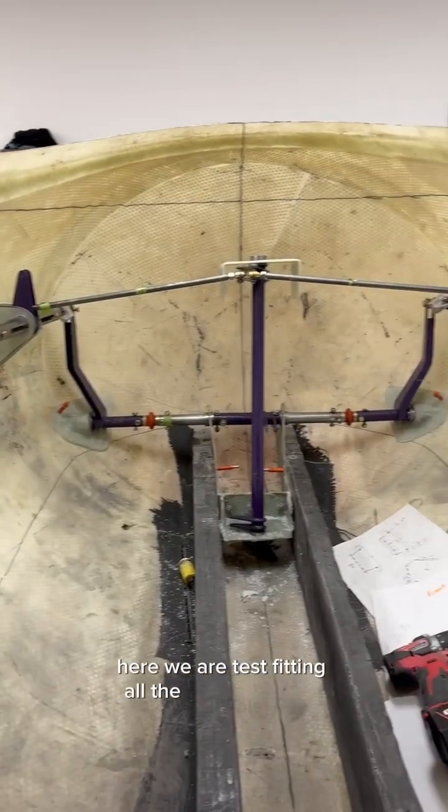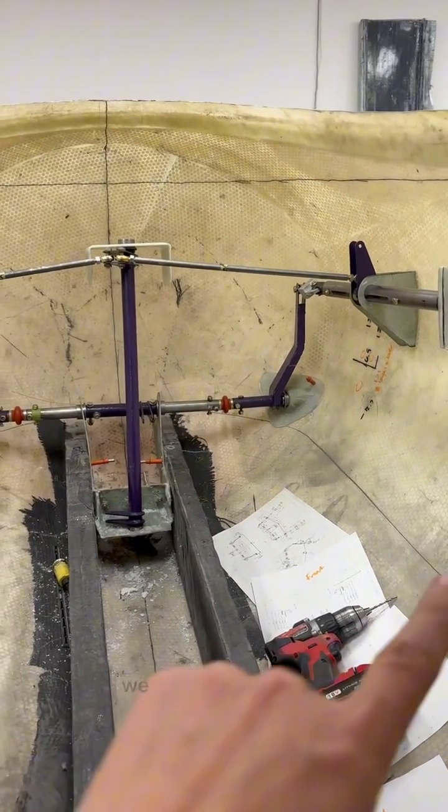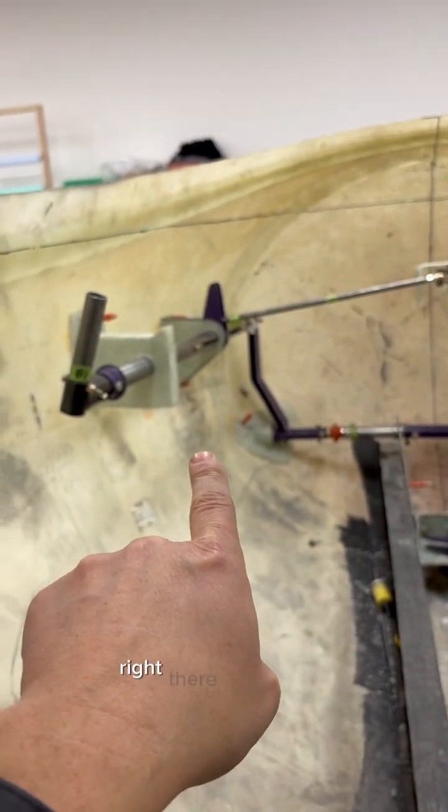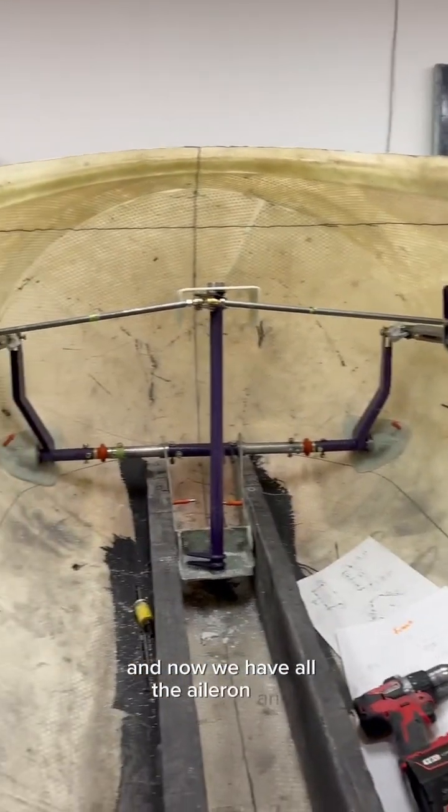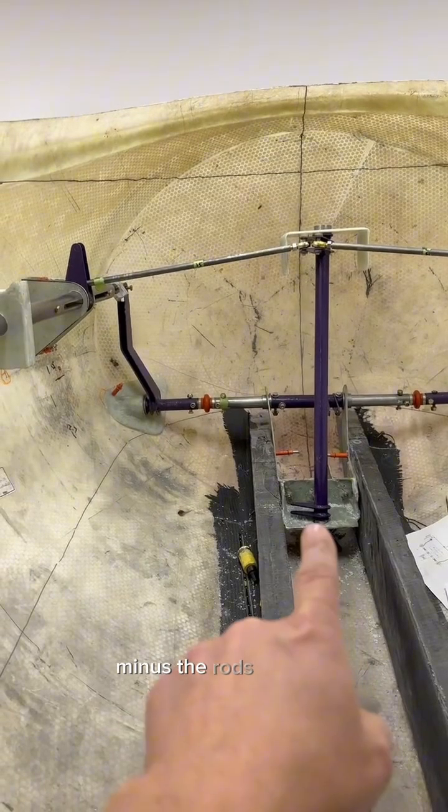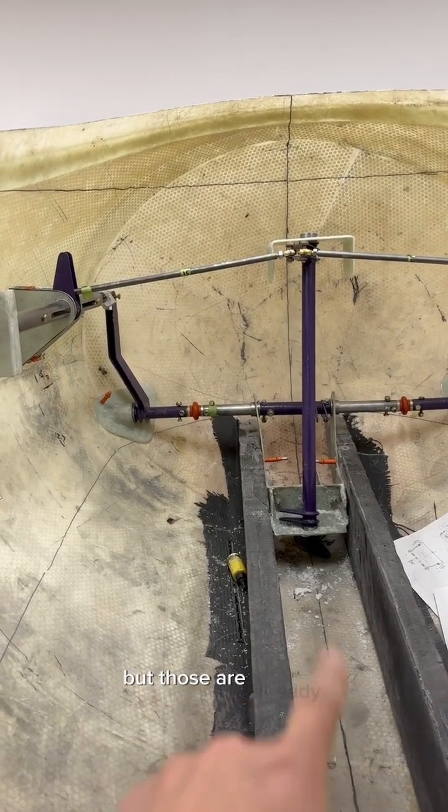Here we are test fitting all the controls in the front. The brakes are already done. We can see the marks from right there. We just got the rudder in place and now we have all the aileron and elevator controls minus the rods coming through the floor right here. But those are already done.